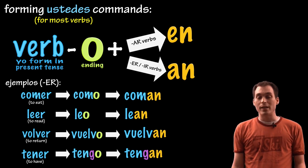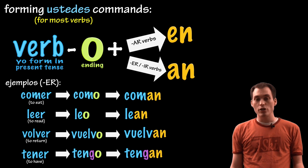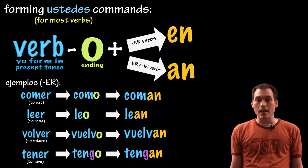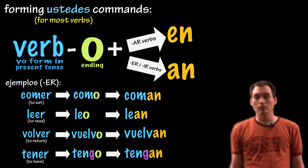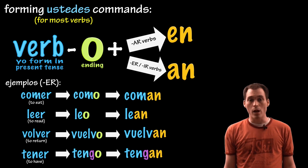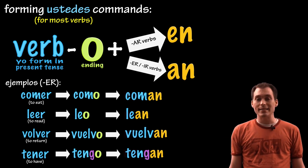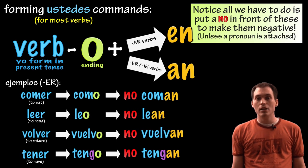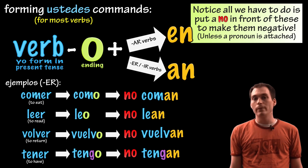Again, notice the spelling changes because vuelvan has that stem changed, O to UE, and tengan has that extra letter G in there, and those are going to appear in the command as well. And to make these negative, just put a no in front. No coman, no lean, no vuelvan, no tengan.